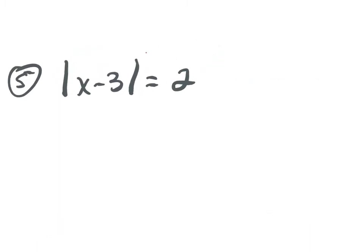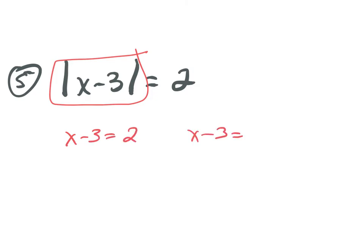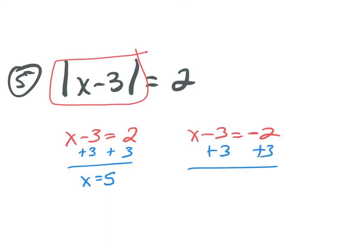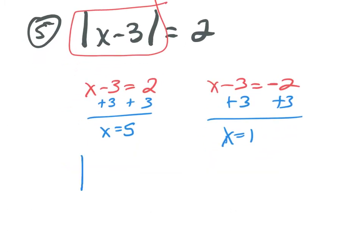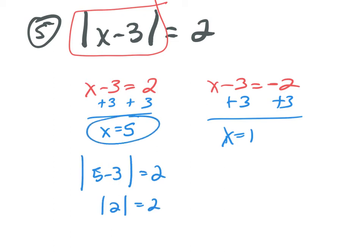Step one: isolate the absolute value. Is it isolated? Yes. So x minus 3 equals 2 and x minus 3 equals negative 2. Add 3: x equals 5. Add 3: x equals 1. Check — back to the original. Absolute value of 5 minus 3: absolute value of 2 equals 2. Good. Absolute value of 1 minus 3: absolute value of negative 2 equals 2. Both solutions work.